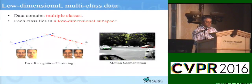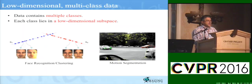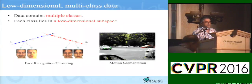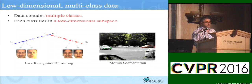In many applications in computer vision and machine learning, we are faced with very high dimensional data sets that contain multiple classes, where each class can be well approximated by a low dimensional subspace. The problem of clustering faces under varying illumination is one of them, where the set of all faces of one individual under all lighting conditions can be well approximated by a nine-dimensional subspace, and so if you have multiple individuals, the data set can be well approximated by multiple subspaces.